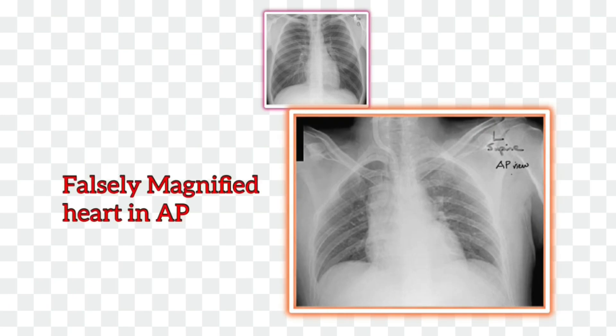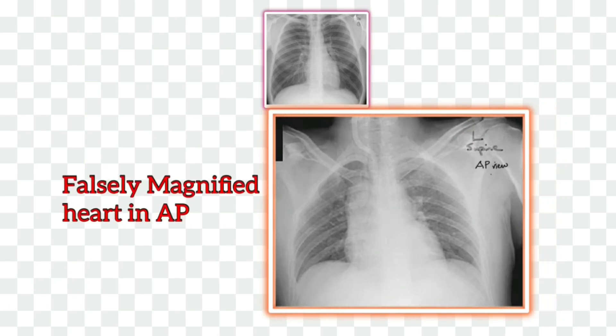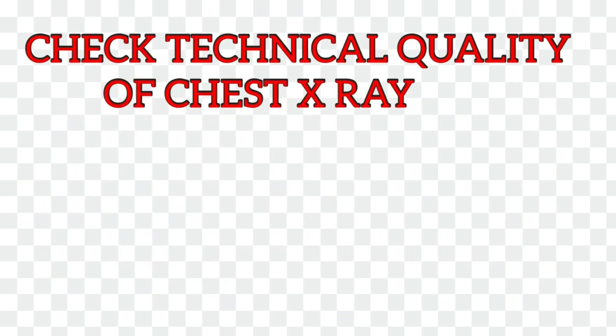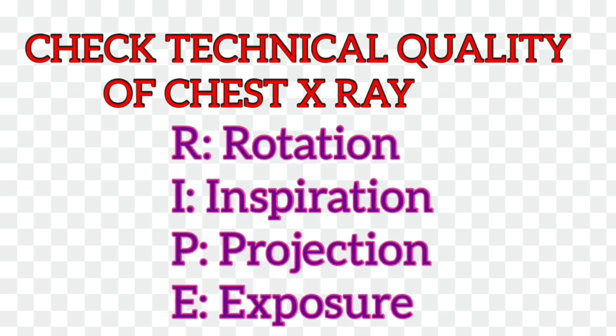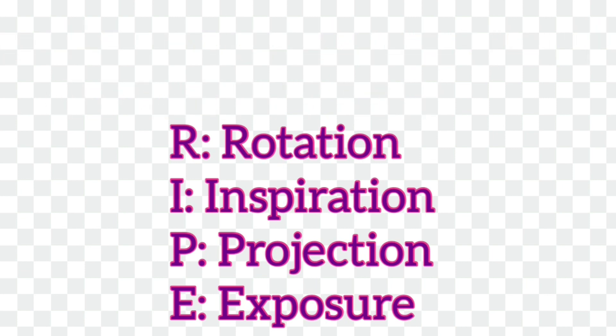We should not comment on heart size in an AP film as the heart appears magnified in AP view. It is very important to check the technical quality of a chest x-ray before starting interpretation. This can be remembered by the mnemonic RIPE: R stands for rotation, I stands for inspiration, P stands for projection which we have already discussed, and E stands for exposure.